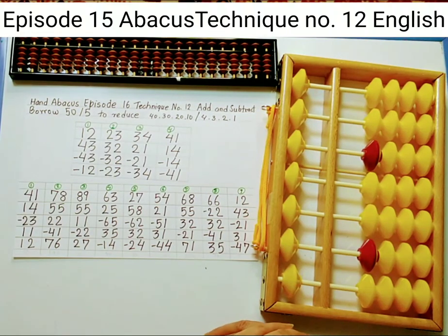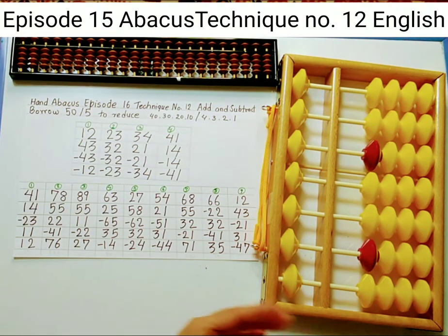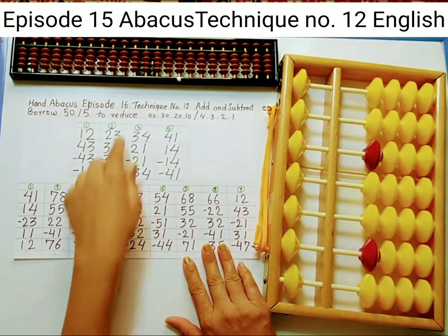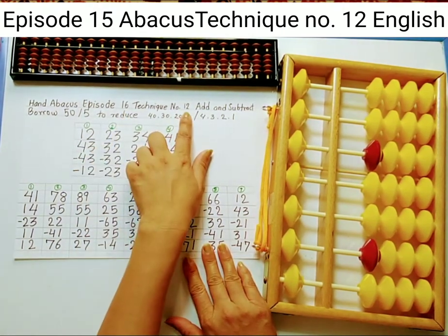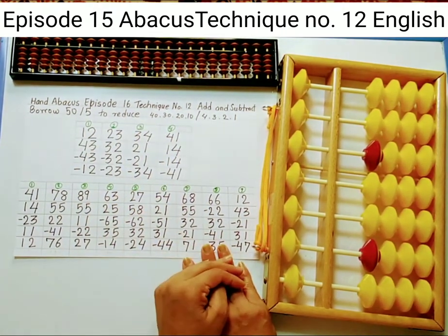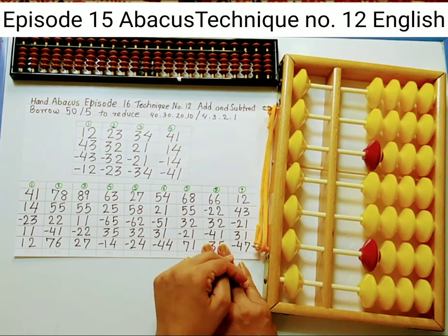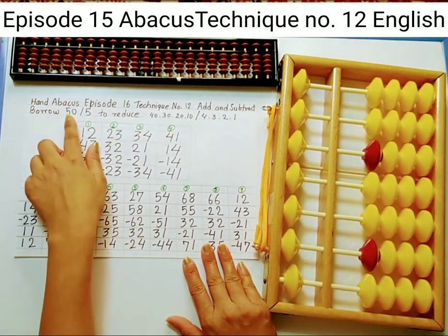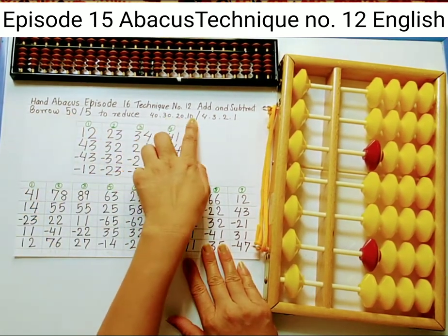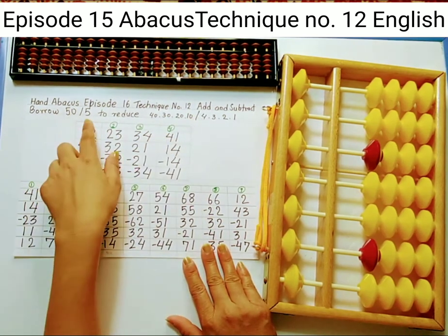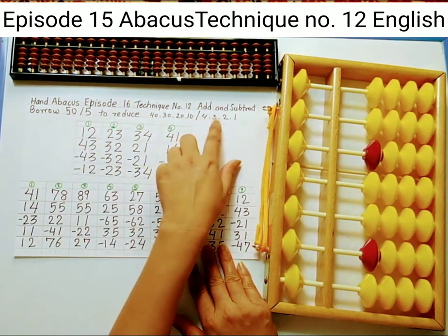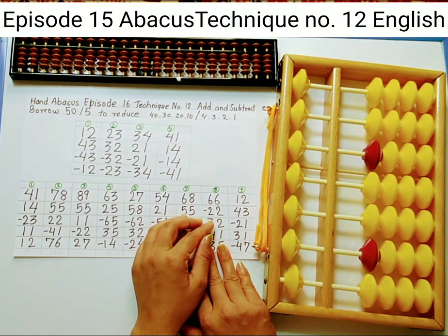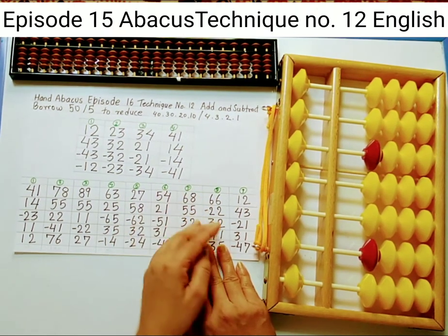Hello, welcome to my Abacus English tutorial. We are doing addition and subtraction. This is episode 16, technique number 12. In this episode I am going to teach you how to borrow 50 to reduce 40, 30, 20, and 10, and how to borrow 5 to reduce 4, 3, 2, and 1.